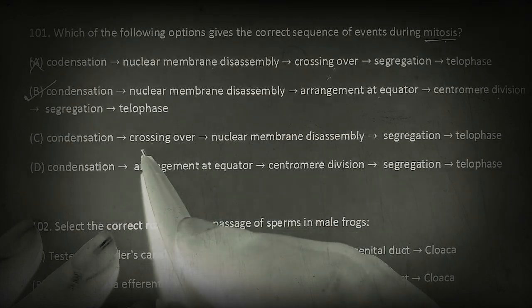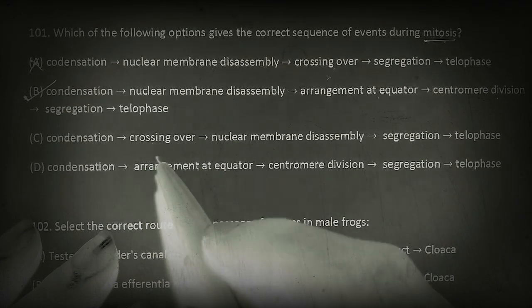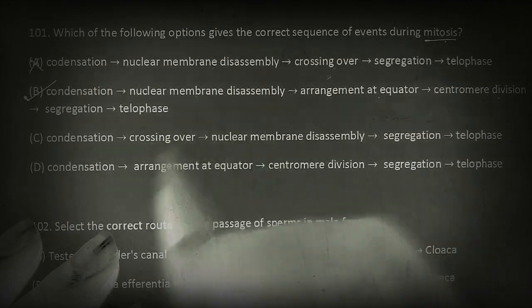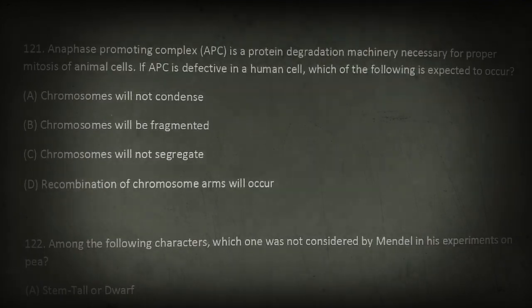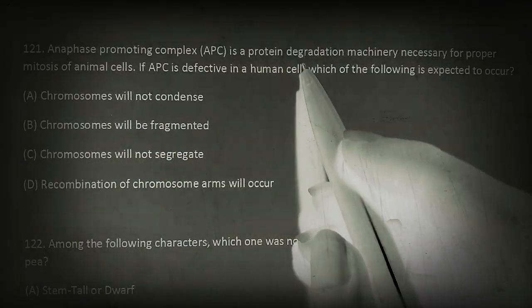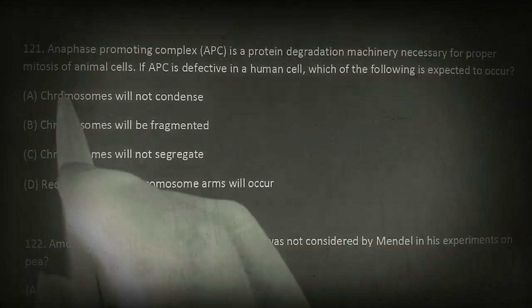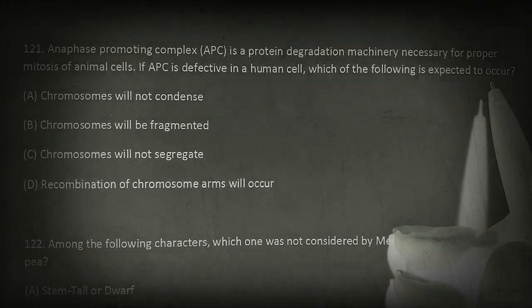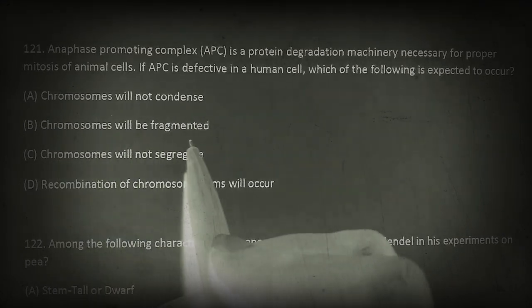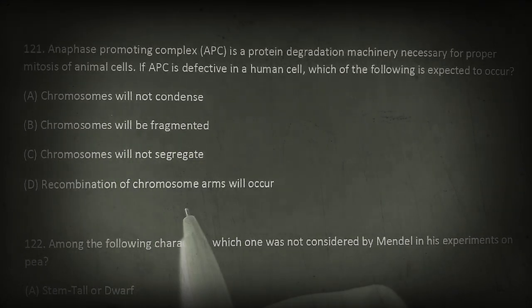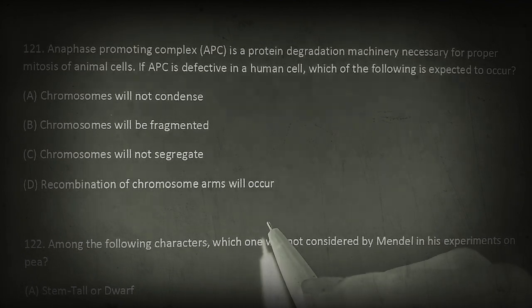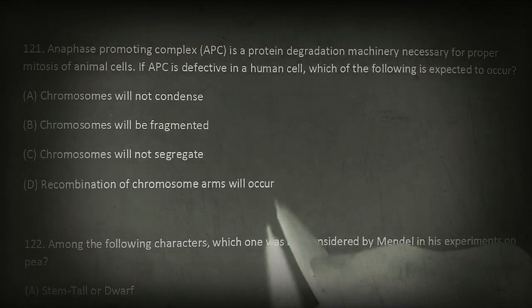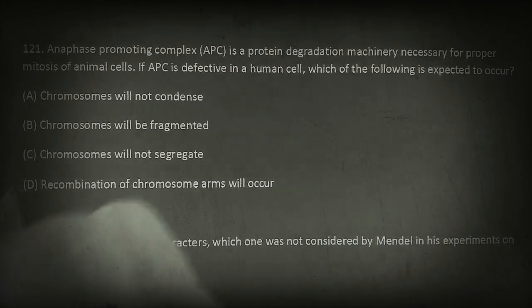And in option C, again we have crossing over. That is, it's the wrong option because the crossing over is the event of meiosis. And this is also wrong because nuclear membrane disassembly is absent over here. Anaphase promoting complex APC is a protein degradation machinery necessary for proper mitosis of animal cells. If APC is defective in a human cell, which of the following is expected to occur? Chromosomes will not condense. Chromosomes will be fragmented. Chromosomes will not segregate. Or recombination of chromosome arms will occur. During anaphase in mitosis, sister chromatids segregate at opposite poles. Therefore, a defective APC will affect chromosome segregation. That is, chromosomes will not segregate.